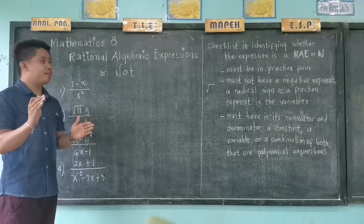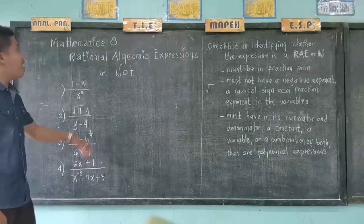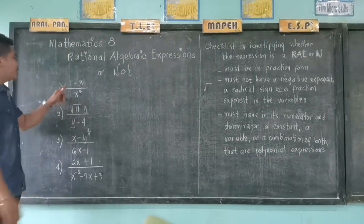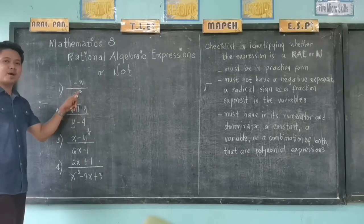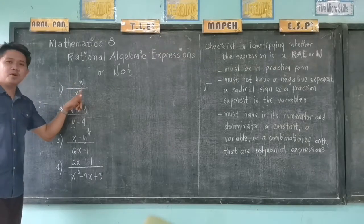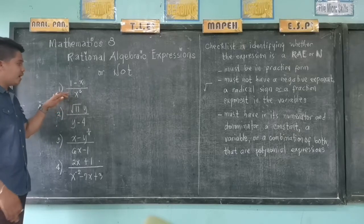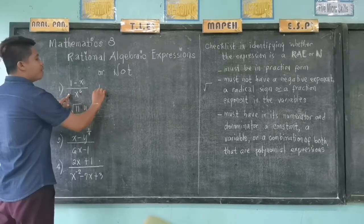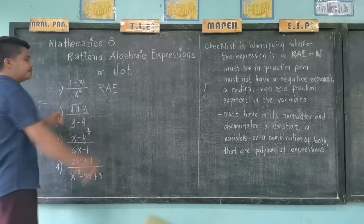For our example, we have to identify if the given expressions are rational algebraic expressions or not. Number one: (1 minus x) over x to the sixth power. In this expression, there is no negative exponent, there is no fraction exponent, and we cannot see a radical sign. So, therefore, this is an example of a rational algebraic expression.